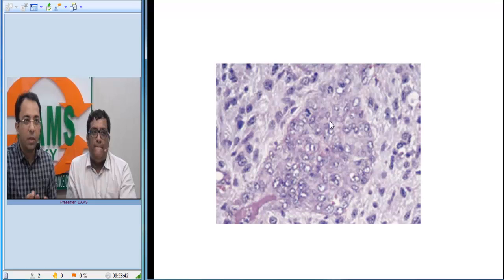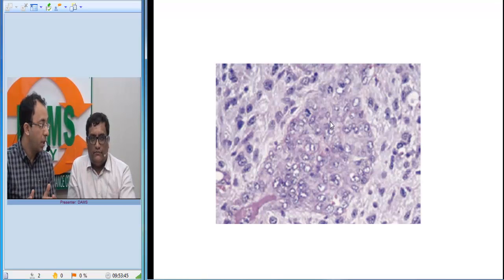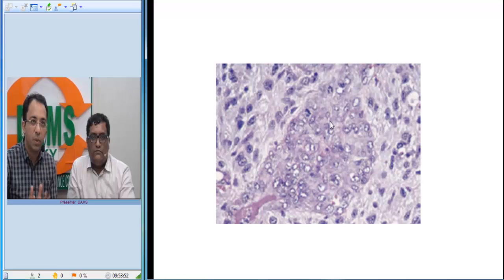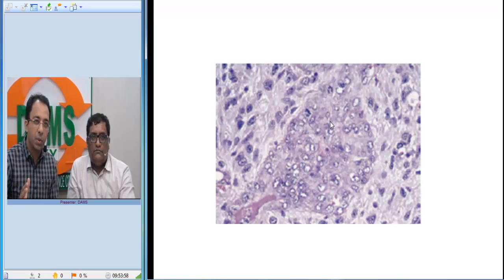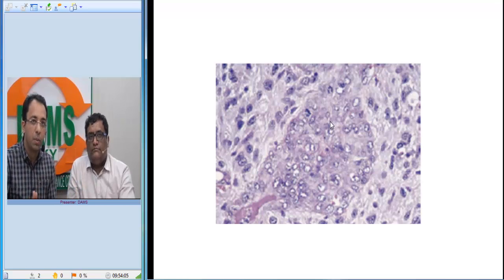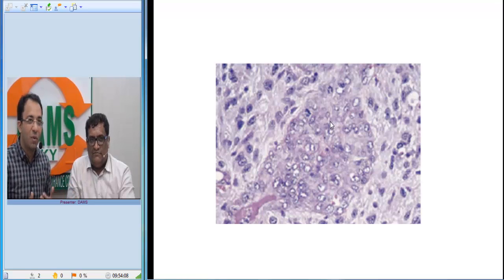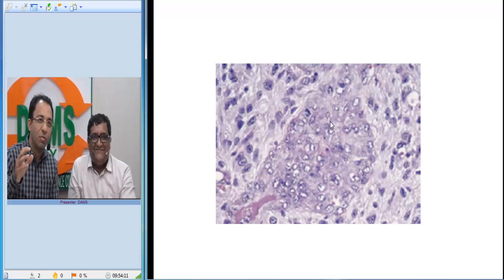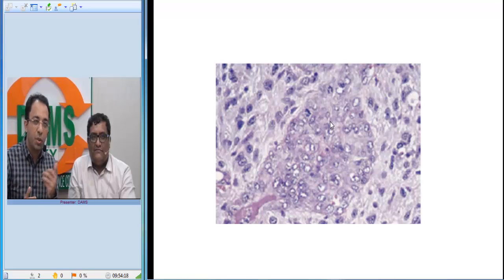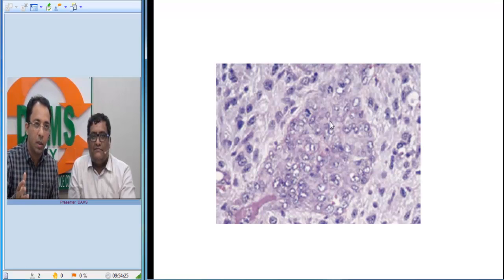To summarize: glioblastoma multiforme is the most malignant glial tumor with very high mortality. On MRI, the patient presents with a short history; radiological images show white matter expansion, the tumor within the white matter, and areas of necrosis. These necrotic areas correspond to pseudopalisading on pathology. Areas of necrosis are seen on both radiology and pathology, and the gross and radiological images beautifully correlate — demonstrating how pathological and radiological findings are interlinked.